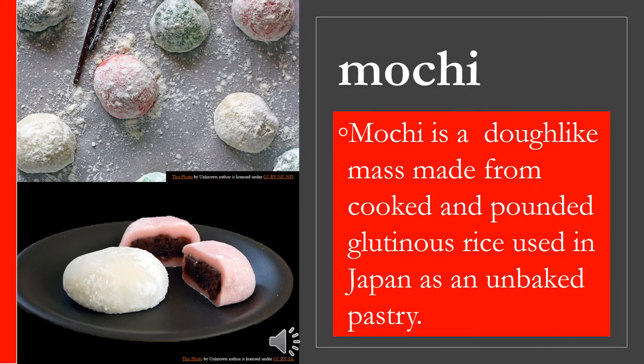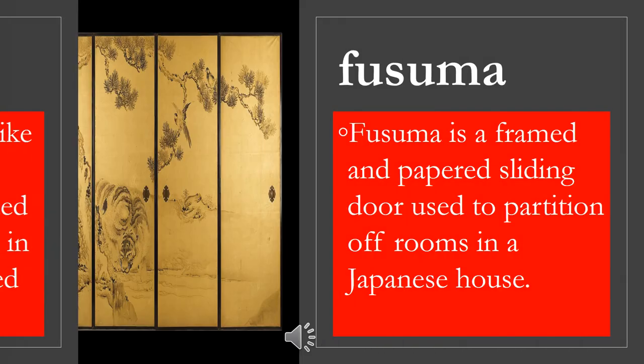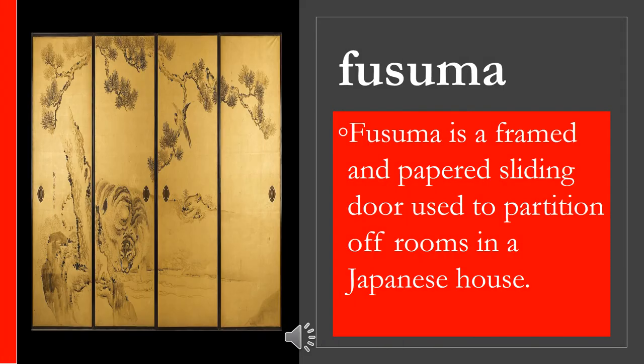Mochi. Mochi is a dough-like mass made from cooked and pounded glutinous rice used in Japan as an unbaked pastry. Fusuma. Fusuma is a frame and paper sliding door used to partition off rooms in a Japanese house.